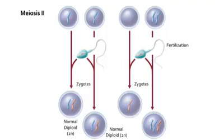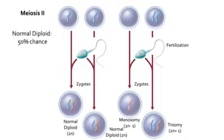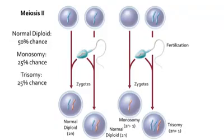If the sperm cell fertilizes the egg that lacks a chromosome, then monosomy results. If the sperm cell fertilizes the egg with an extra chromosome, then trisomy results. In this scenario, there is a 50% chance of a normal diploid, a 25% chance of a monosomy, and a 25% chance of a trisomy.